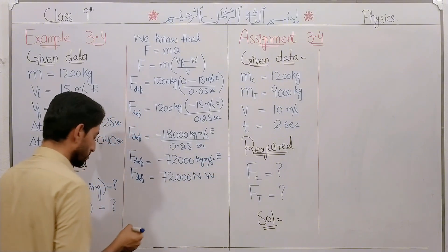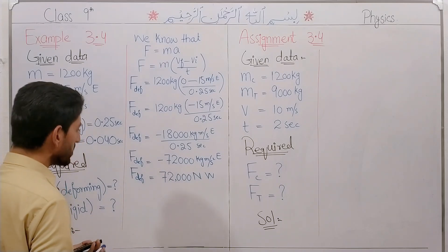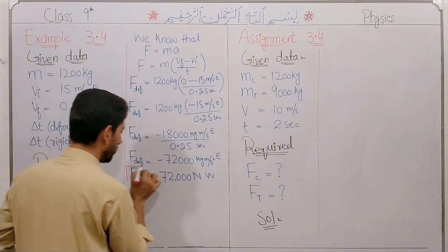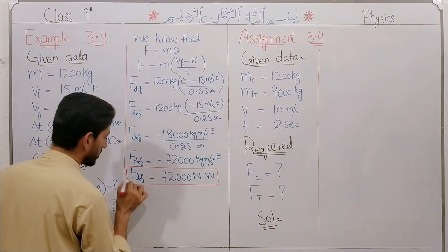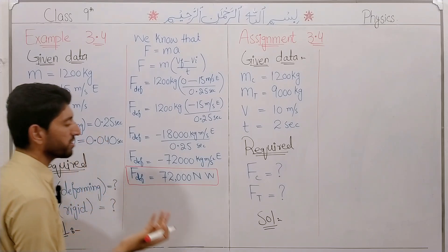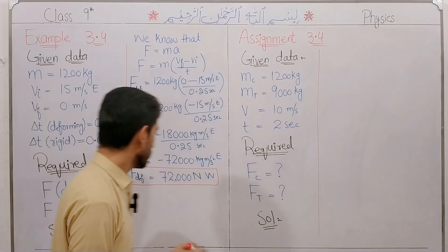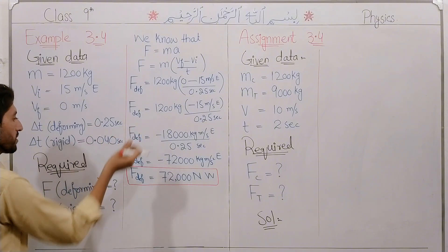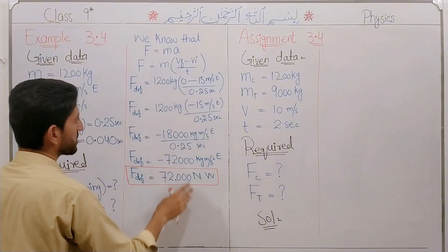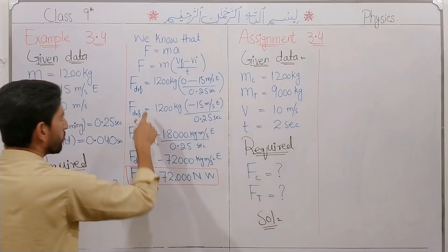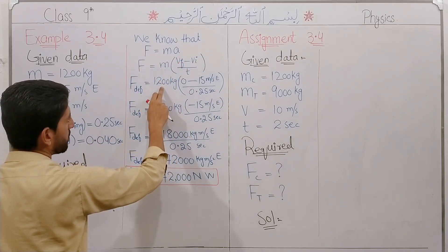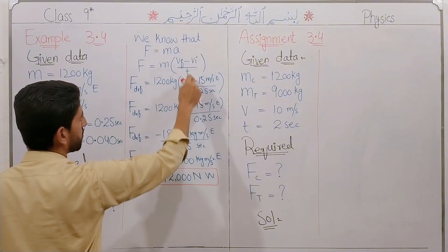The force causes the motor car to deform. For a rigid body, the force is applied on the rigid frame or bumper. For a rigid body, F is equal to m times the final velocity minus initial velocity divided by time. Mass is the same, final velocity is zero, minus initial velocity 15, and time is 0.025 seconds.